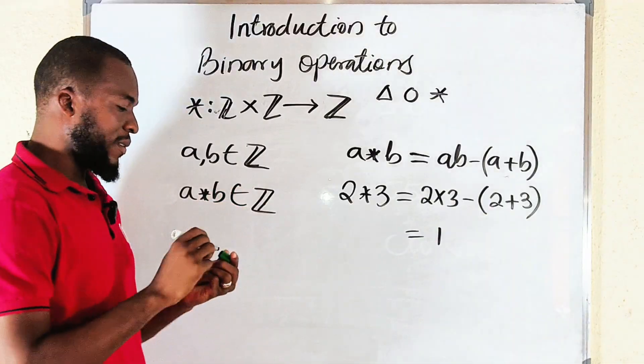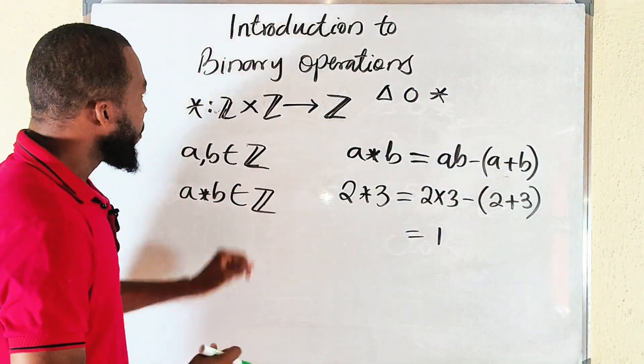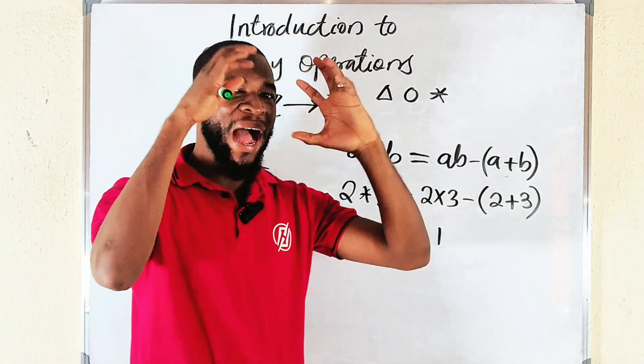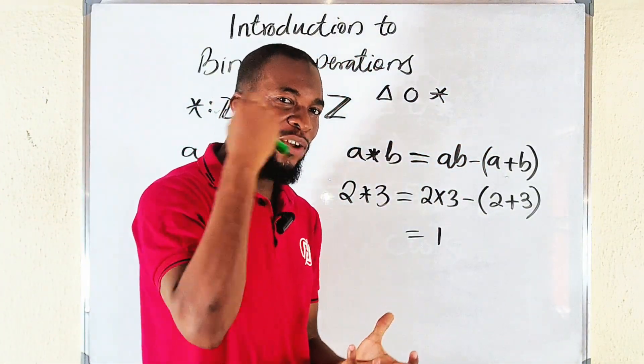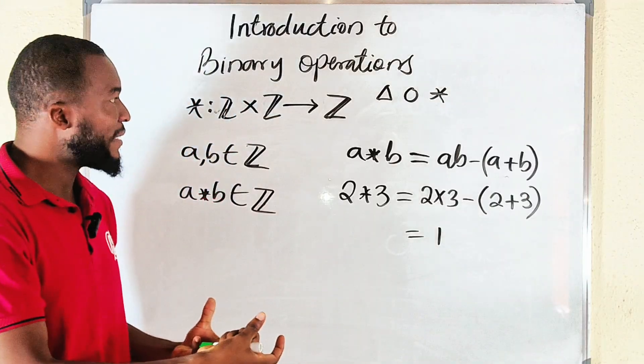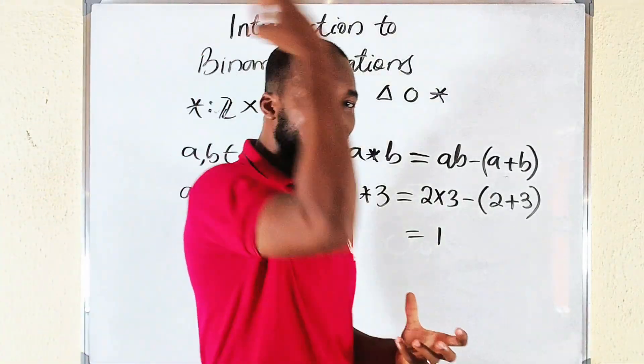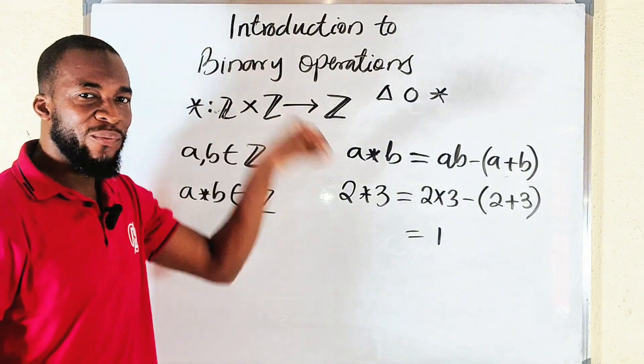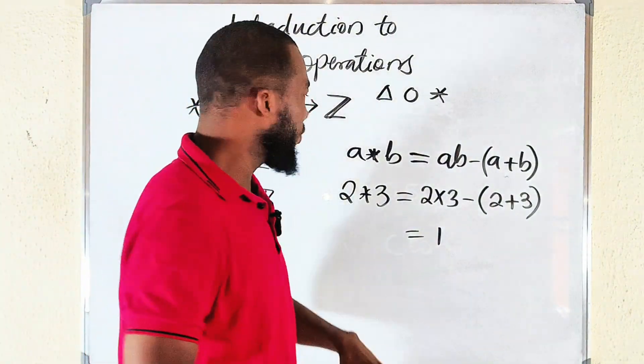So I repeat: binary operations is a rule that combines two elements from a given set and produces an entirely different element that must be from that set.